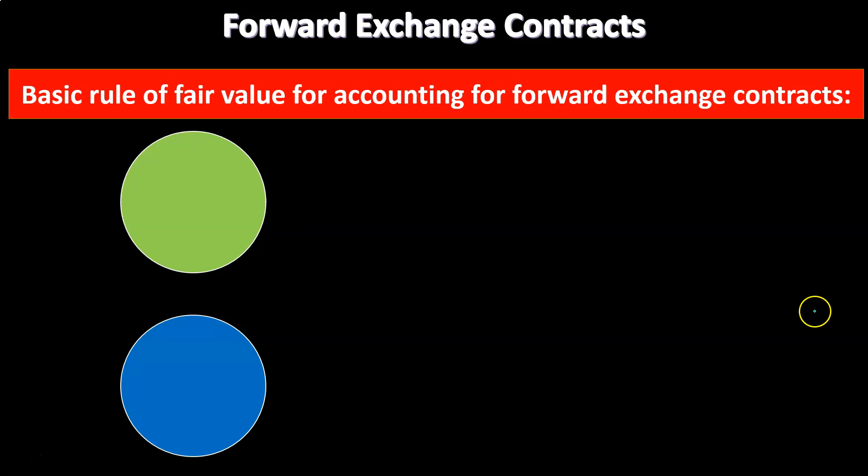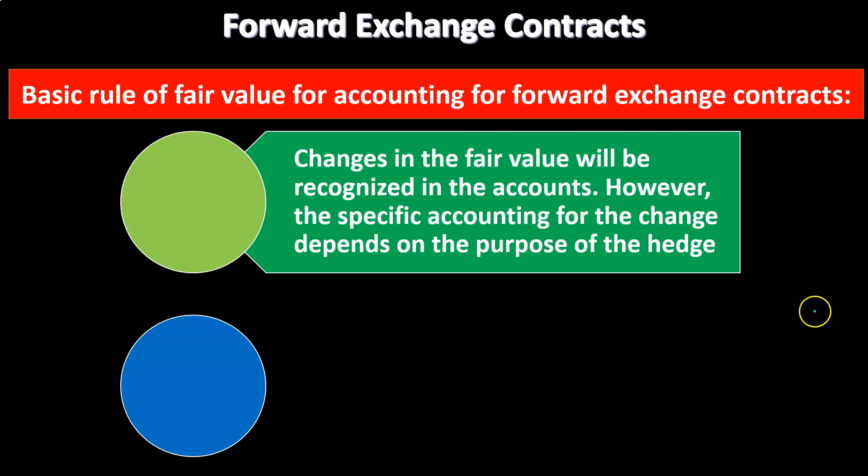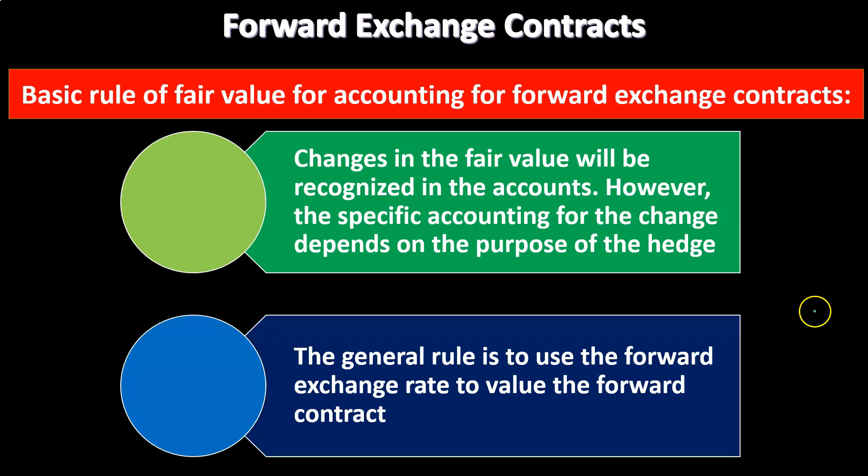The basic rule of fair value for accounting for Forward Exchange Contracts: changes in the fair value will be recognized in the accounts. Typically, if you have a receivable in foreign currency, changes in the fair value will be recognized on the balance sheet. You'll value it at the point you put it on the books, and then it can change as foreign currency rates change relative to the dollar, adjusting the receivable value to reflect new rates. However, the specific accounting for that change depends on the purpose of the hedge — whether you're using it purely for speculative reasons, as a hedge, and what type of hedge. The accounting will change based on that, so we'll have scenarios to examine those differences.